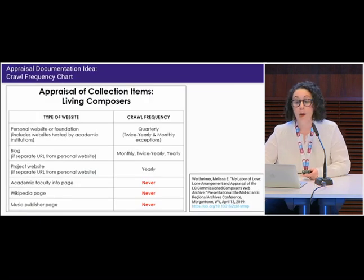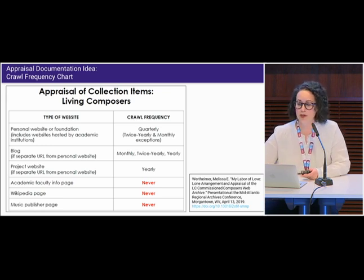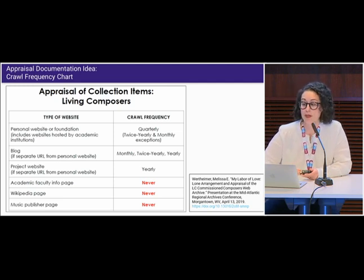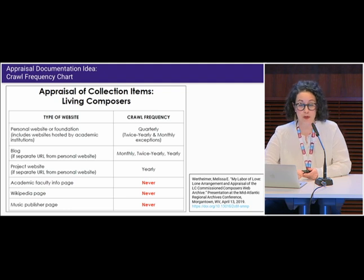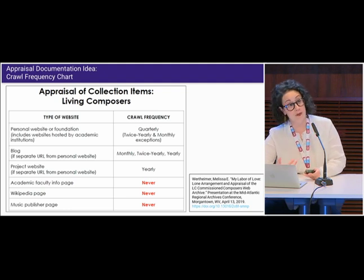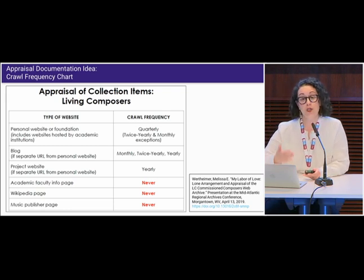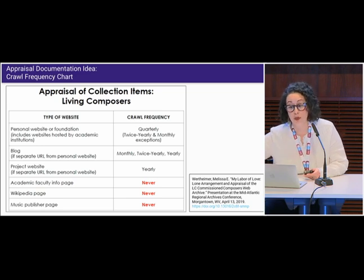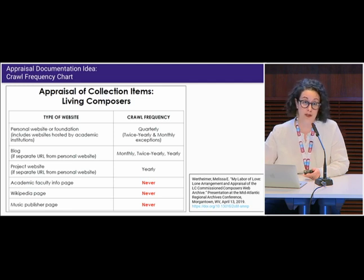Here's another idea: because crawl frequency can be considered as part of technical appraisal, you can create a chart that assigns crawl frequencies for specific types of websites. For example, when I built the Library of Congress Commission Composers web archive, I found that living composers had websites that needed to be appraised differently than those of deceased composers. To make my work more streamlined, I created this exact chart. It also serves as ready reference as I continue to build the collection, as well as documentation for future staff about why I made certain selections and decisions.